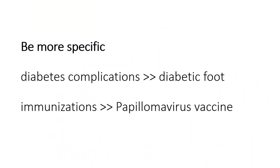Before we leave the topic of narrowing searches, I want to point out another way to narrow a search: sometimes you need to think of a different, more specific keyword. So if you were looking for diabetes complications, you might pick a specific complication like 'diabetic foot.' Or if you were wanting to write on immunizations, you might choose a specific immunization like the 'papillomavirus vaccine.'